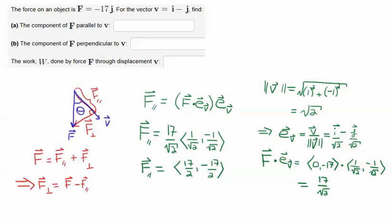Okay, next I want to get the perpendicular component, and if this is the parallel component, then the perpendicular component is, of course, perpendicular to V. And if you just use the parallelogram law, this is F parallel, and then F perpendicular, the sum of those two vectors equals F.